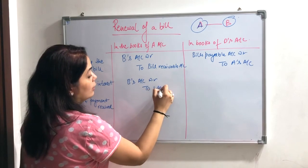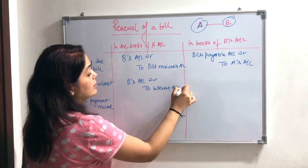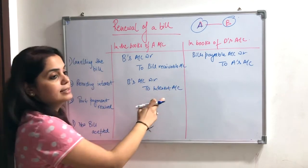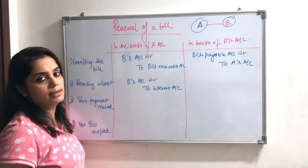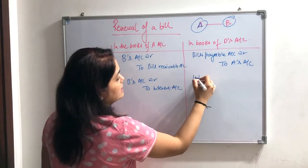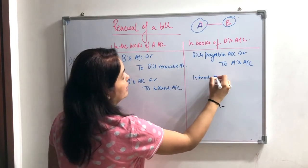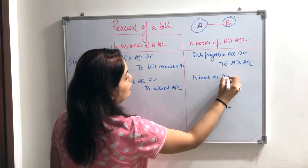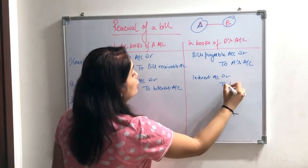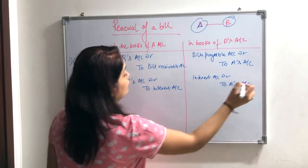Now you will also charge interest to the payee B for the extended period. In this case, the entry is: B's account debited to Interest account.